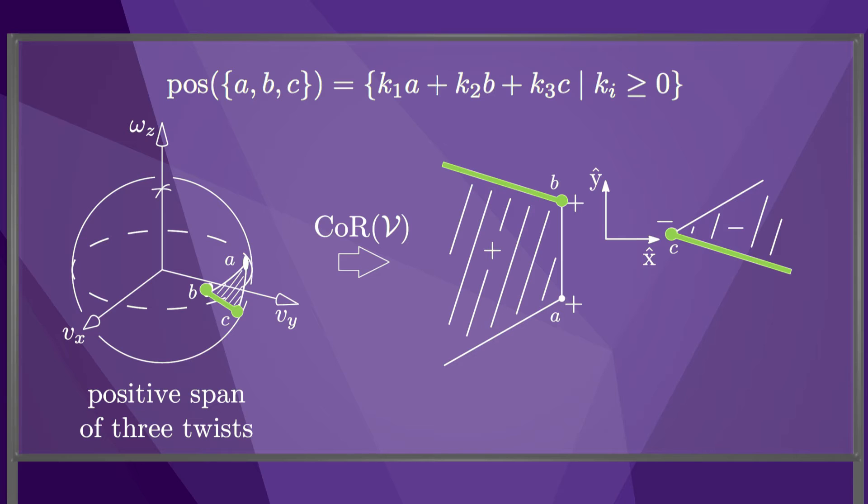This green segment, passing through infinity, is the positive span of the rotation center b with a plus label, and the rotation center c with a minus label.